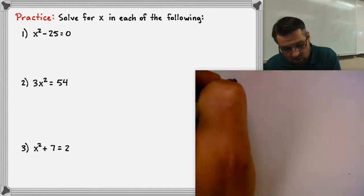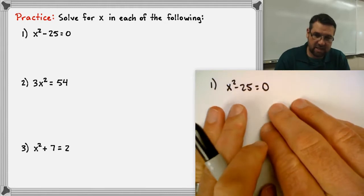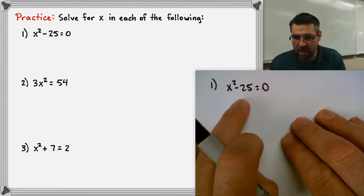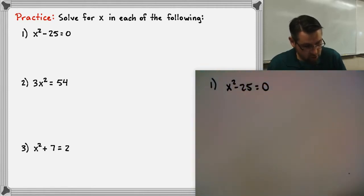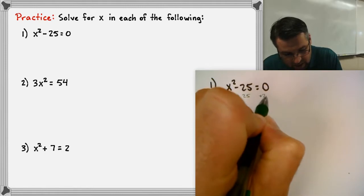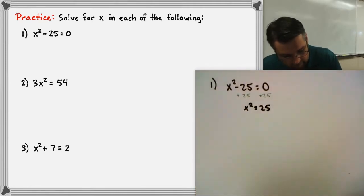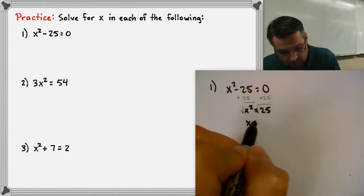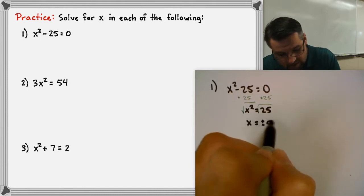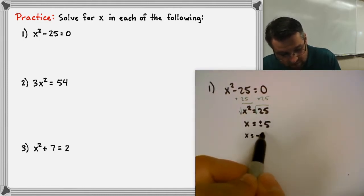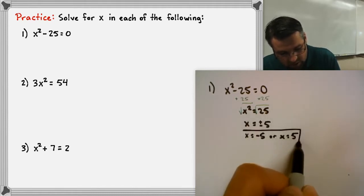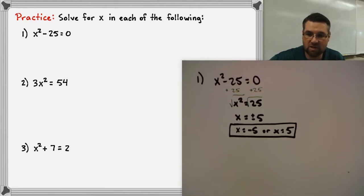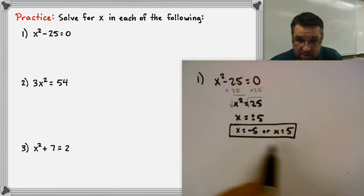For number one: x squared minus 25 equals zero. This is just an equation, not a parabola, but the work is similar. We only have x squared, so we can solve directly. Add 25 to both sides: x squared equals 25. Square root both sides: x equals plus or minus five. So x equals negative five or x equals five. Since we're solving an equation — not finding x-intercepts on a graph — we leave the answer as solutions, not coordinates.